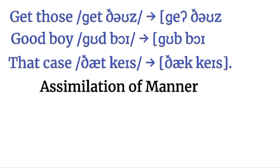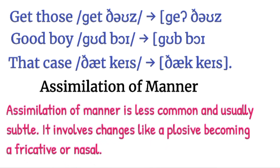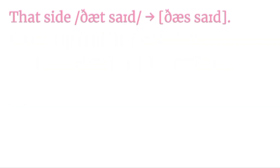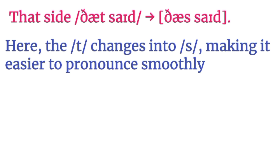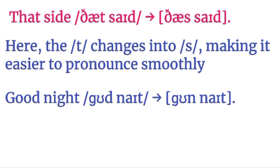Next is assimilation of manner. Assimilation of place is the most dominant type; assimilation of manner is less common and usually subtle. It involves changes like a plosive becoming a fricative or nasal. For example, 'that side' — in rapid speech, the D sound changes to match the S, making it easier to pronounce: 'tha side.' Another example: 'good night' — the D is dominated by the initial sound of the second word, so we say 'goon night' instead of 'good night.'